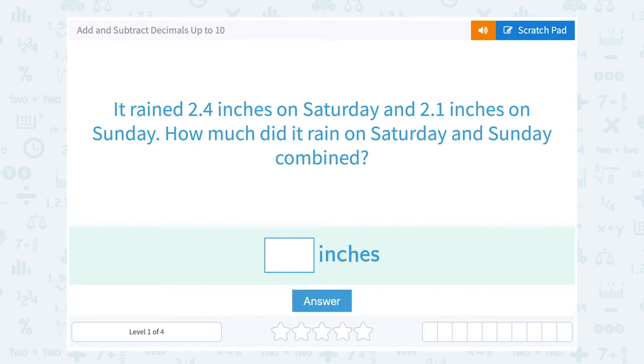Let's take a look at how to add and subtract decimals up to 10. It rained 2.4 inches on Saturday and 2.1 inches on Sunday. How much did it rain on Saturday and Sunday combined?